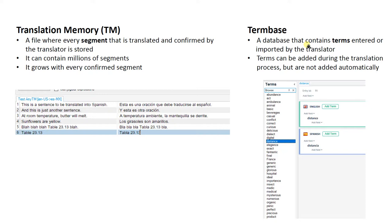Another translation resource is a term base. Term bases are databases that contain terms entered or imported by the translator — this can be done manually. These are basically glossaries or word lists. Terms can be added during the translation process, but are not added automatically. For example, you have the word 'distance' and its translation 'distancia.' Notice the difference between the translation memory — which stores segment-level translation units — and the term base, which is basically like a dictionary or a glossary.